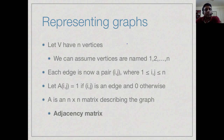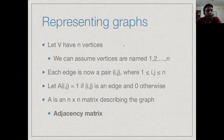Let us make some assumptions. In any graph we consider, there will only be a finite set of vertices. If there are n vertices, to simplify life, let us name these vertices 1, 2, up to n. Therefore, an edge is a pair of numbers i, j.